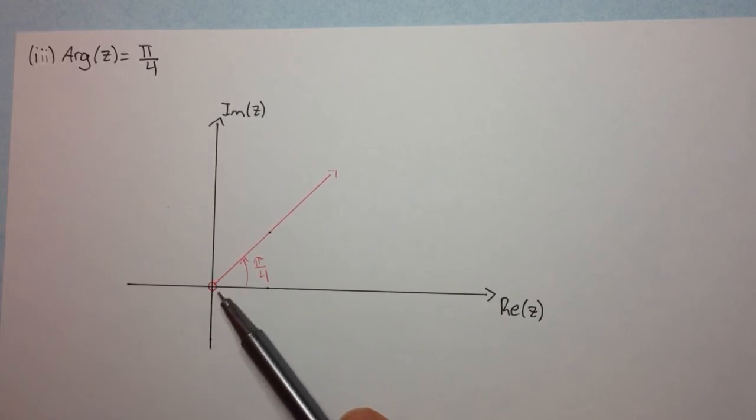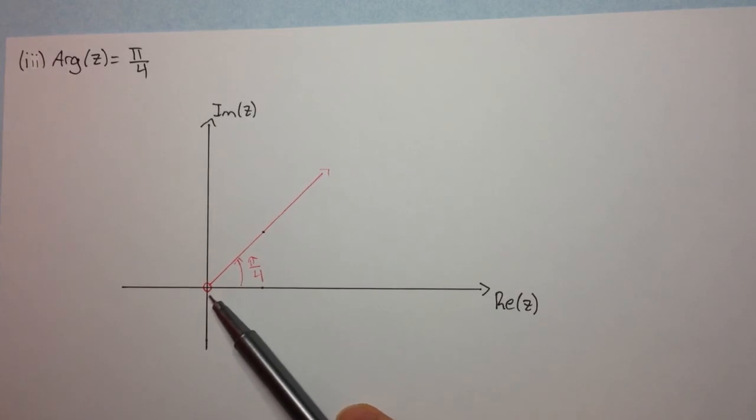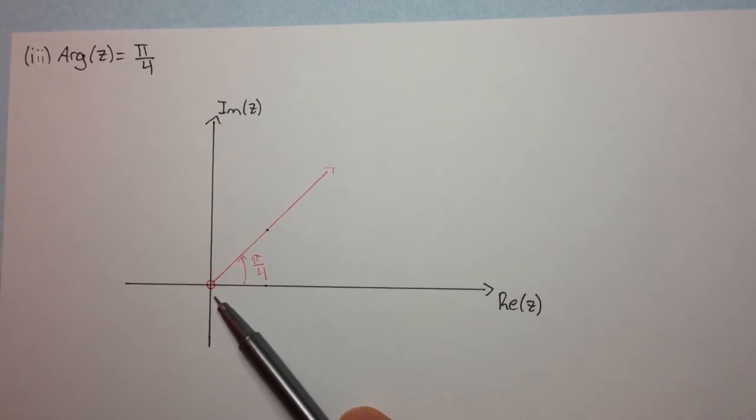Remember, we can't include the origin because if z could take 0 plus 0i, if z could take that value, then we'd have that the arg of 0 plus 0i is equal to pi on 4 but the argument of 0 is undefined and so we have to put an open circle here to exclude the origin.